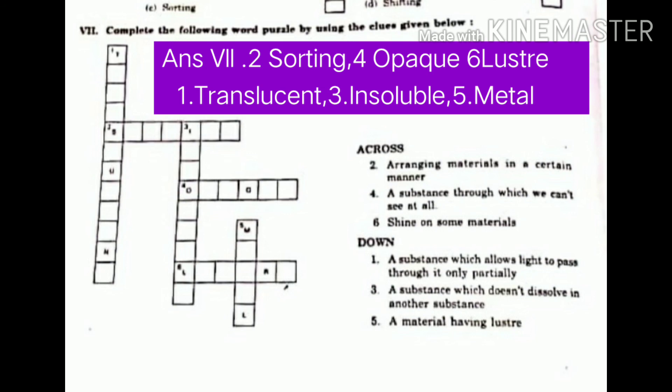Seventh. Complete the following word puzzle by using the clues given below. Across. Arranging materials in a certain manner. Sorting. Fourth. A substance through which we can see at all. Opaque. Sixth. Shine on some materials. Lustre. Now down. First. A substance which allows light to pass through it only partially. Answer. Translucent. Third. A substance which does not dissolve in another substance. Insoluble. Five. A material having lustre. Metal.